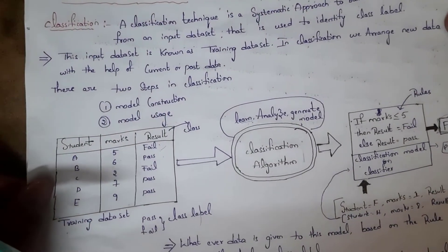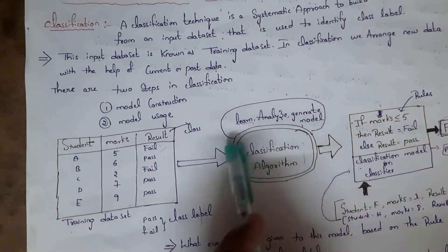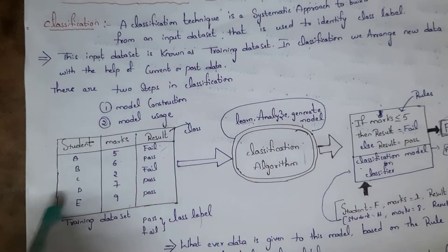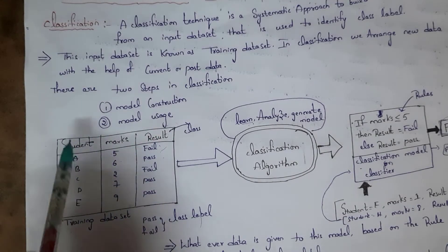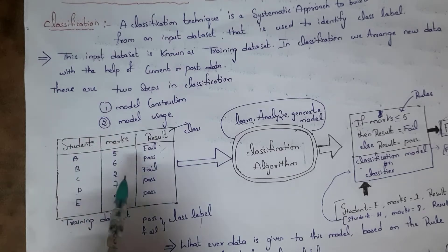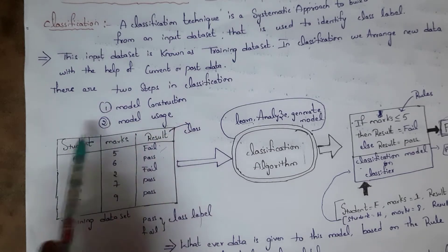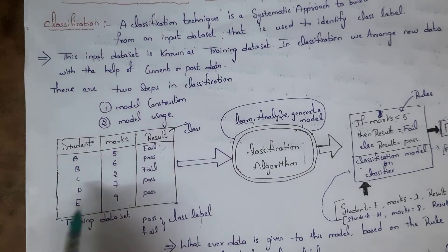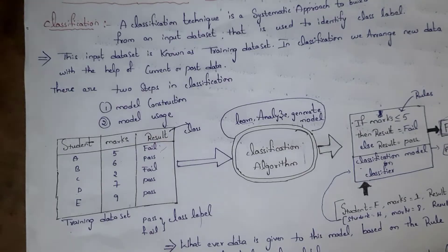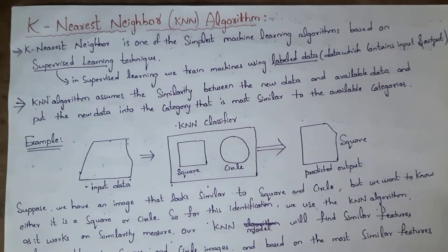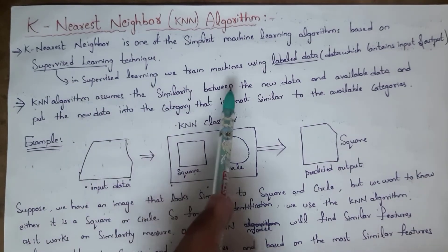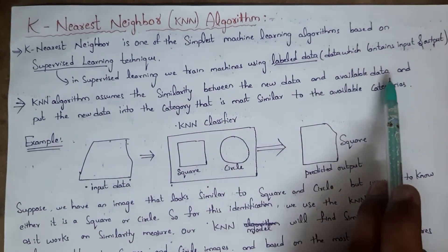For example, in classification, we train the algorithm using labeled data. In a student marks dataset, student and marks are the input, and the result is the output — that is labeled data. KNN is a supervised learning technique that assumes similarity between new data and available data, and then places the new data into the most similar category.